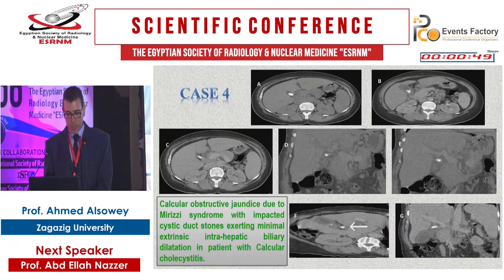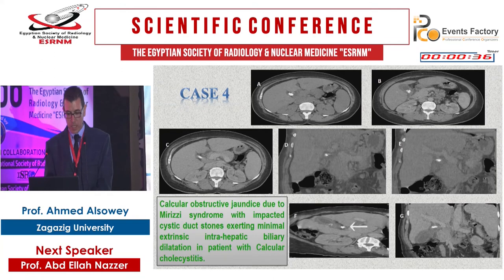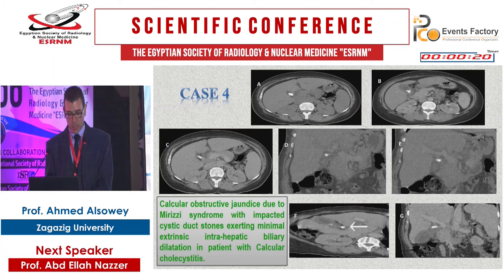Another case shows an impacted cystic duct stone compressing the biliary duct externally, as well as a gallbladder stone with thickening of the gallbladder wall and a pericholecystic collection. The coronal reconstruction revealed the presence of the stone outside the common bile duct and compressing it. This represents calcular obstructive jaundice due to Mirizzi syndrome with an impacted cystic duct stone causing biliary dilatation in a patient with calcular cholecystitis.